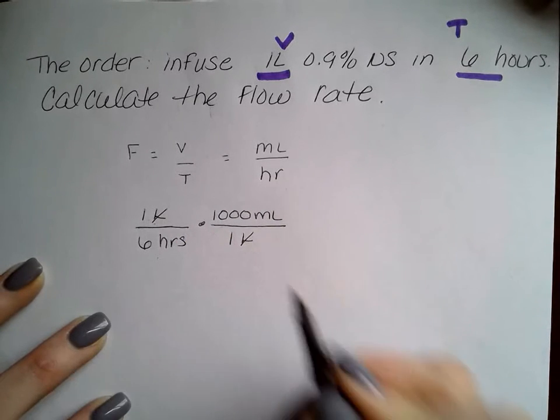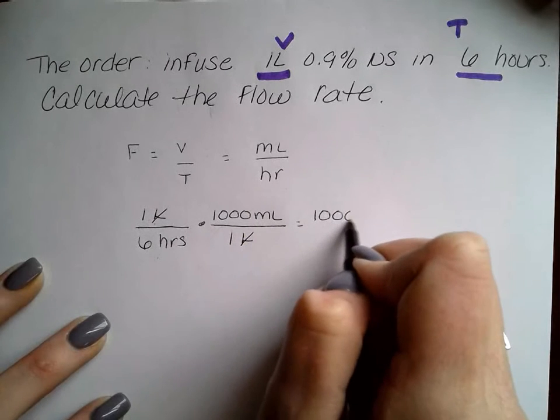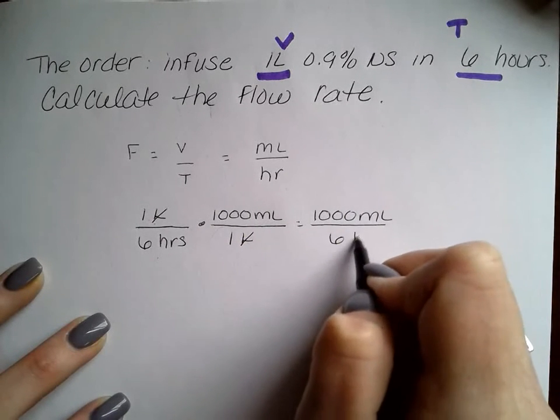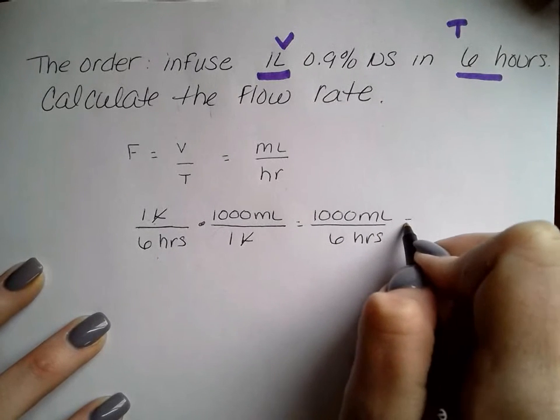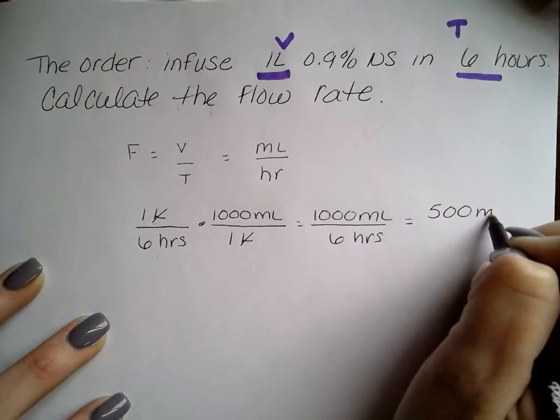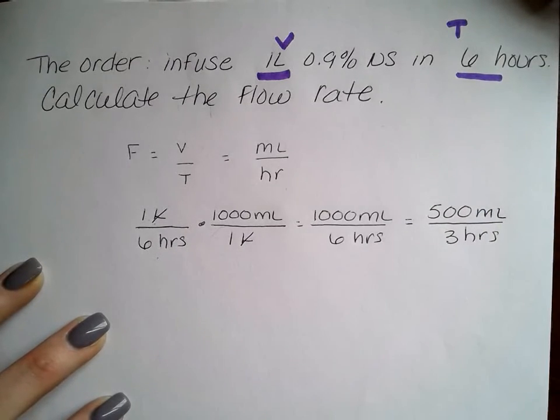This allows our units to factor. We're left with a thousand milliliters in six hours. That simplifies to 500 milliliters in three hours.